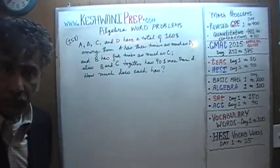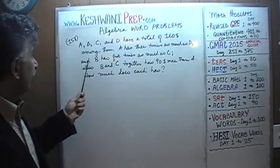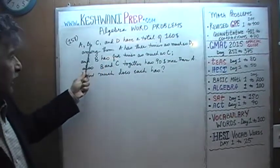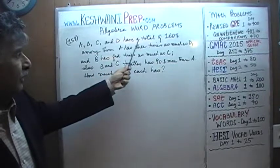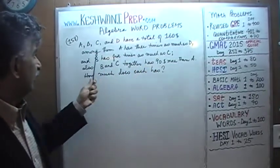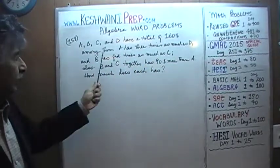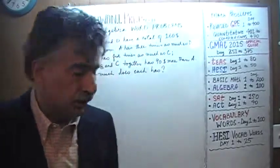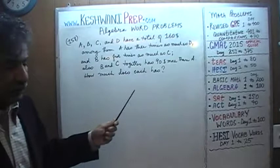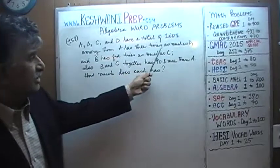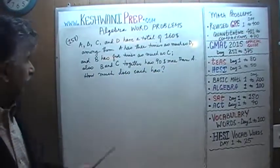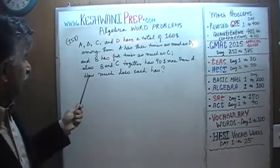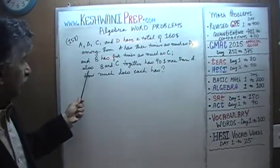It's already on the blackboard. Let's take a look at it. It says we have four people: A, B, C, and D. We are told that A, B, C, and D have a total of 160 dollars among them — not 160 dollars each, but 160 dollars total, all together. We are further told that A has three times as much as D, and B happens to have five times as much as C.